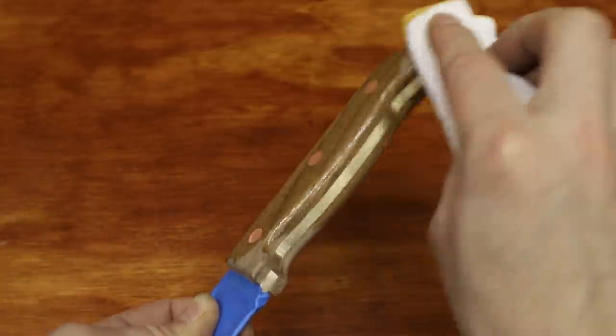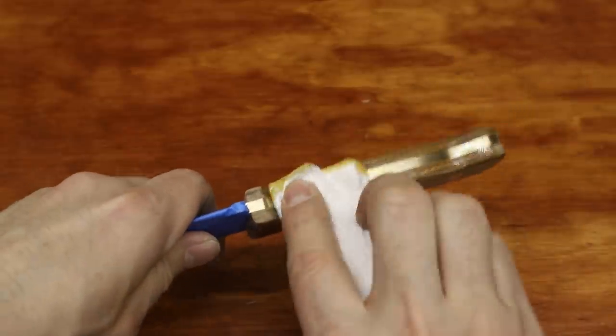To seal the wood, I used some wipe-on polyurethane. It might not be the best option, but that's what I had on hand.